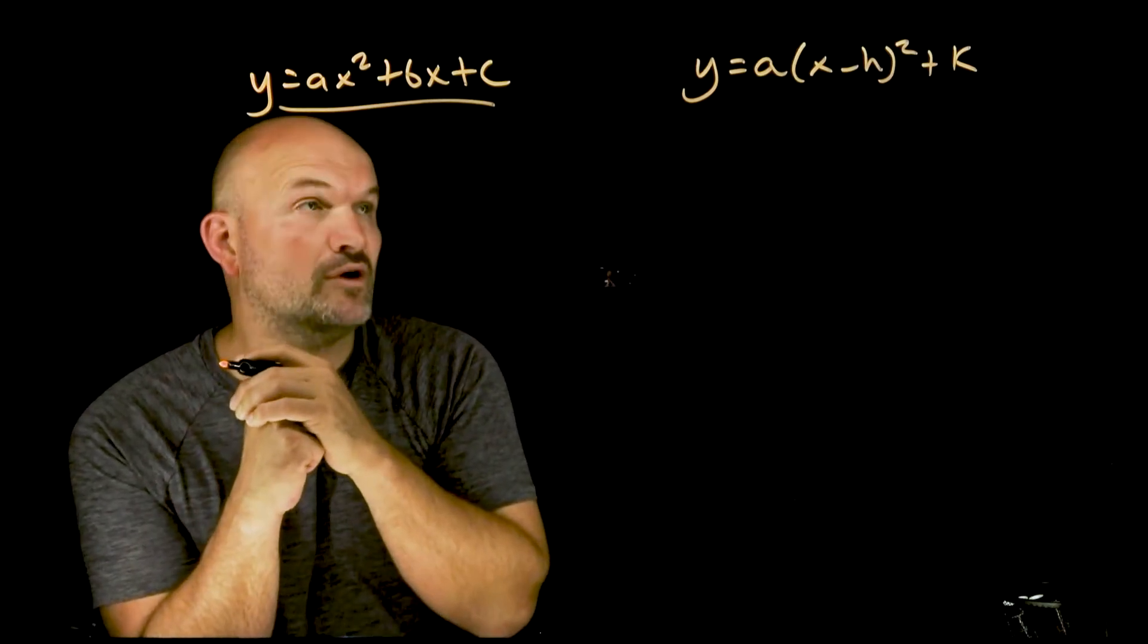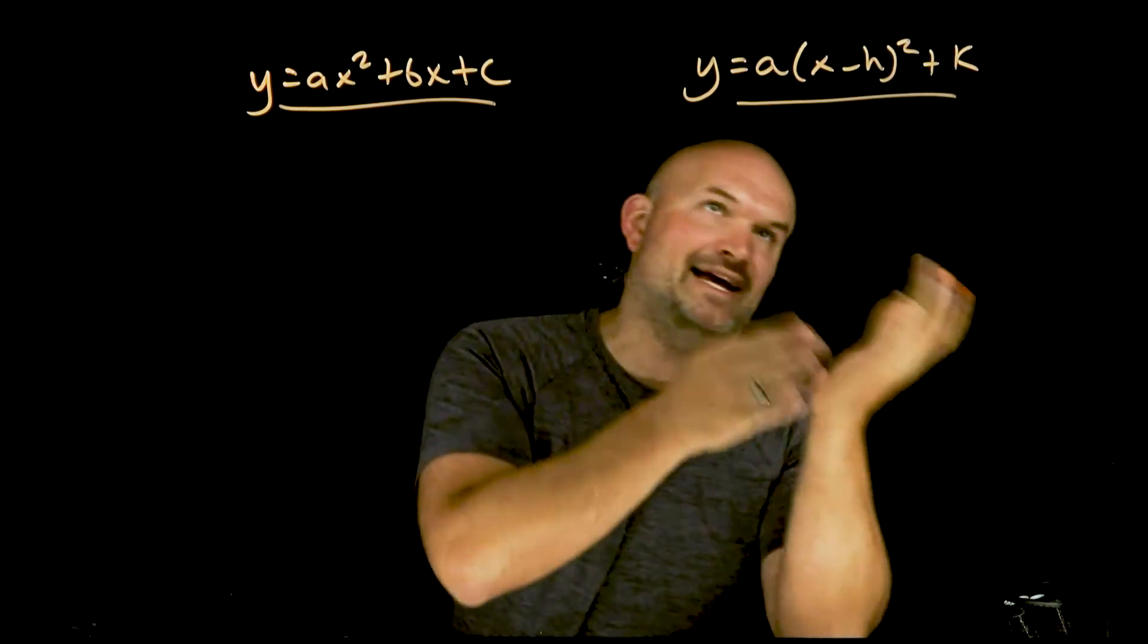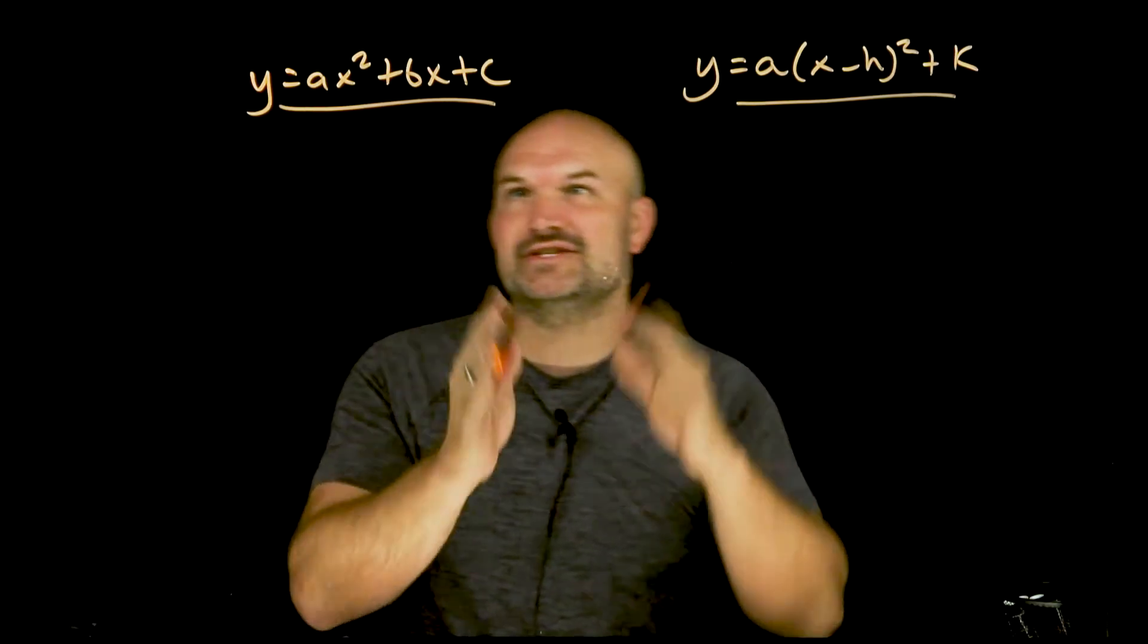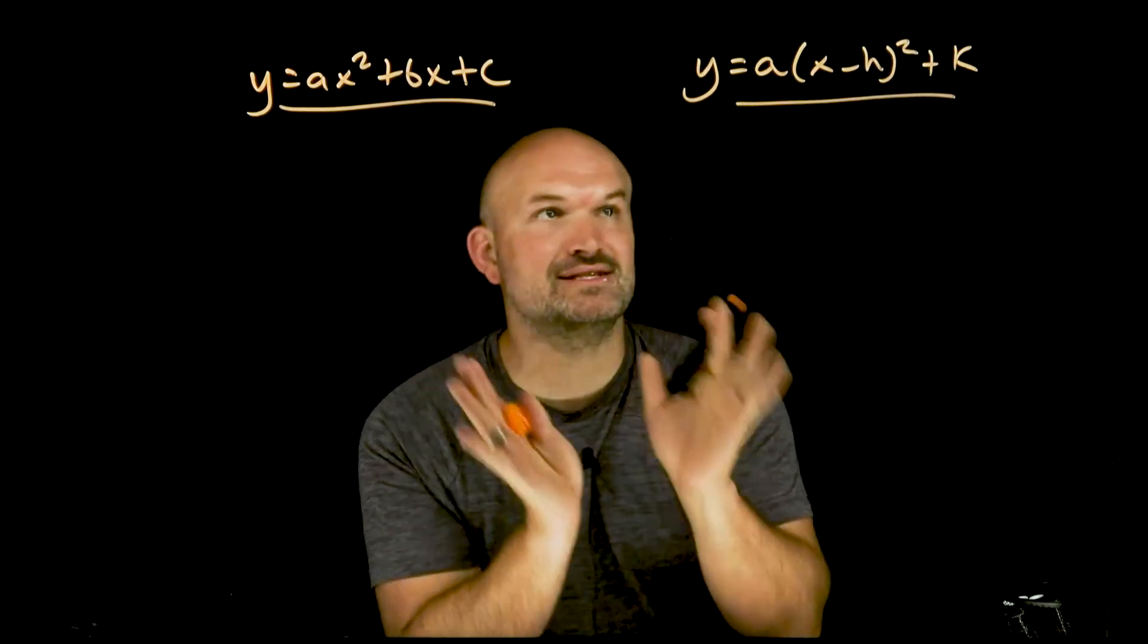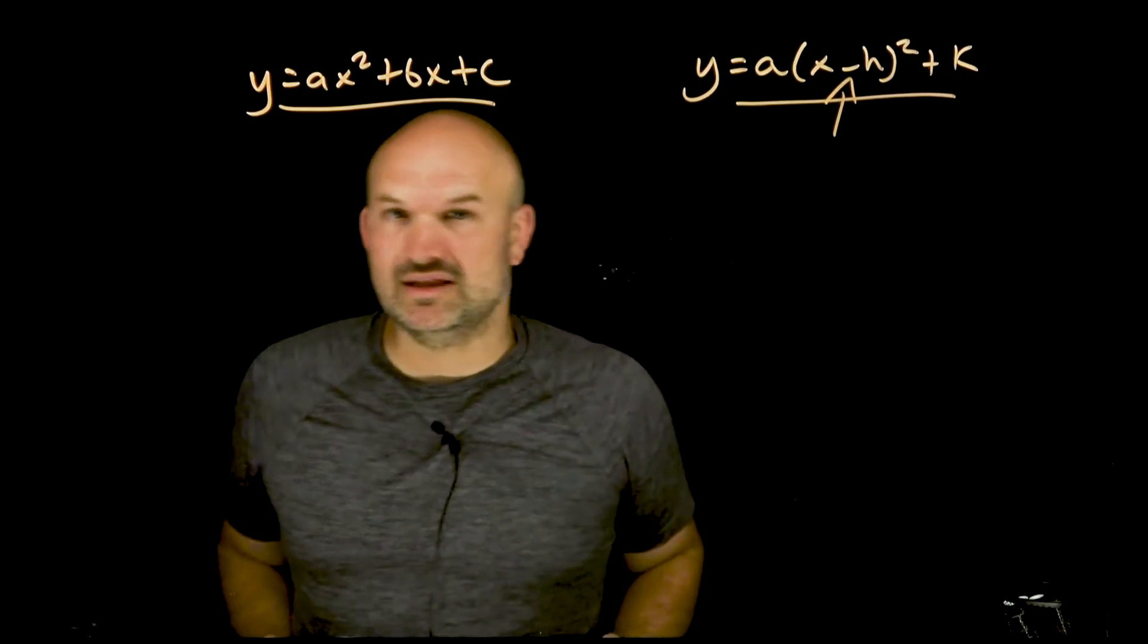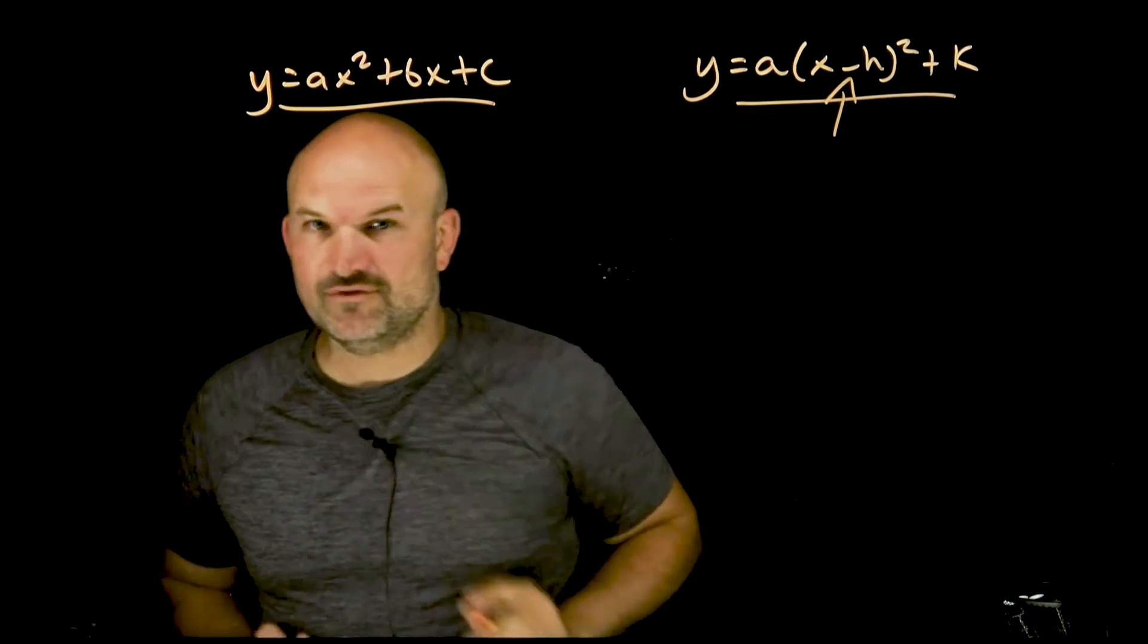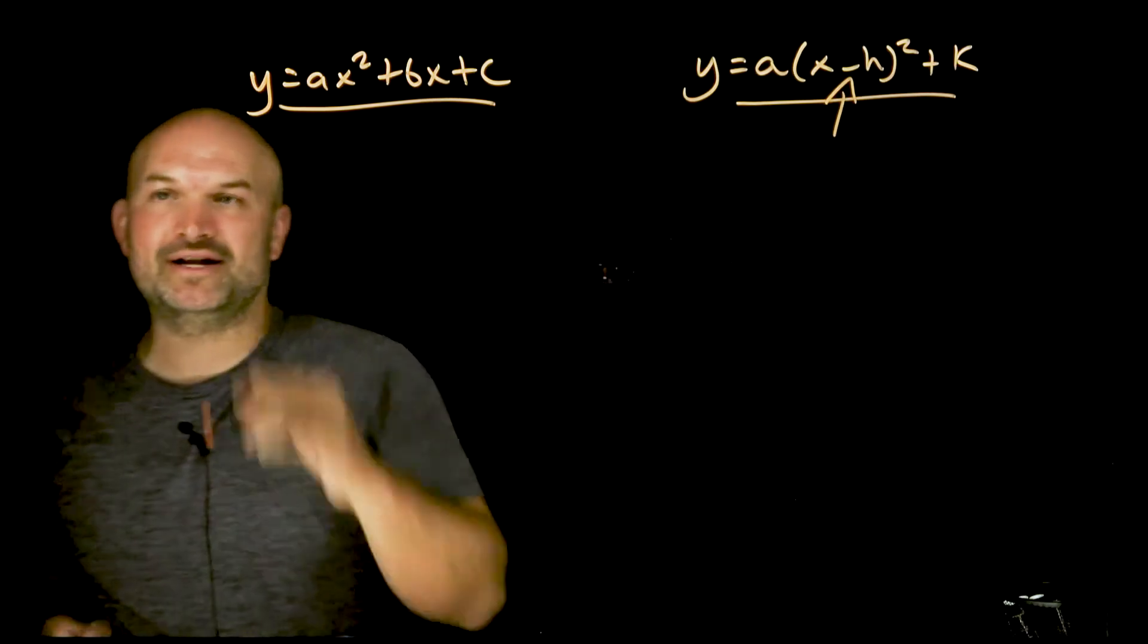The main thing that we want to know about completing the square is why exactly we are doing it or what are we trying to achieve. This is an example of standard form for a quadratic: y=ax²+bx+c. This is an example of vertex form: y=a(x-h)²+k. The main thing I want you to understand or see is this has what we call a binomial squared, whereas standard form does not.